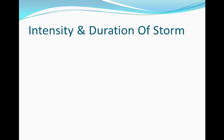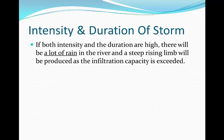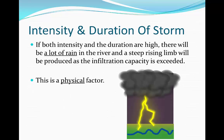The first factor we're going to look at is the intensity and duration of storm. If the rainstorm is very intense and it rains for a very long time, there will be a lot of rain entering the river. This means there will be a steep rising limb produced from the amount of water falling in, which exceeds the infiltration capacity. So more water will be entering the river than can be exiting, hence making the river discharge increase.